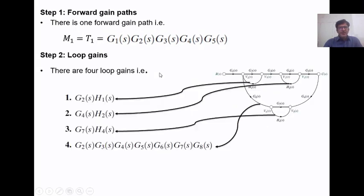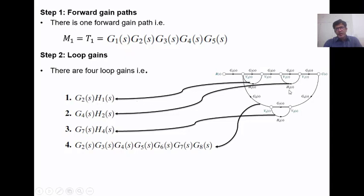In the second step we find the loop gains. In the given signal flow graph we have four loops: first loop, second loop, third loop, and a larger loop. The loop gain for the first loop is g2·h1, the loop gain for the second loop is g4·h2, the loop gain for the third loop is g7·h4, and the loop gain for the fourth larger loop is g2·g3·g4·g5·g6·g7·g8.